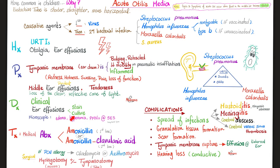You diagnose acute otitis media clinically using otoscopy. Anytime there is effusion, you can send it to the lab for stain and culture to identify the causative organisms. Management: most patients will respond to amoxicillin. If that does not work, try amoxicillin-clavulanic acid. Repeated attacks of otitis media over a long period where nothing seems to help can benefit from myringotomy, which is an incision into the eardrum, and you can add a tympanostomy tube to drain the effusions. Complications include spread of infection, tympanic membrane rupture, hearing loss, or chronicity.